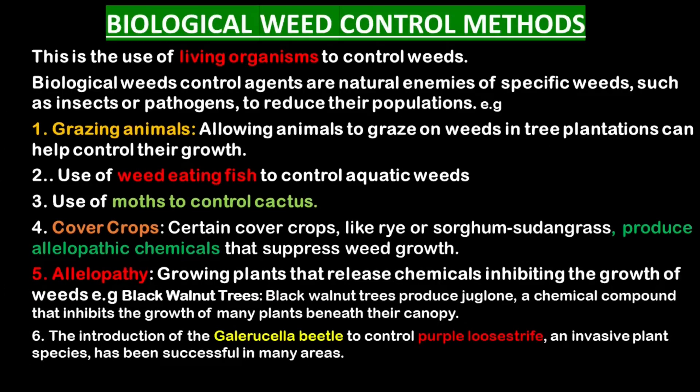Biological weed control is the use of living organisms to control weeds. Biological weed control agents are natural enemies of specific weeds, such as insects or pathogens, that reduce their populations. Examples include grazing animals that graze on weeds in between trees in tree plantations, weed-eating fish to control aquatic weeds, use of moths to control cactus, and the use of certain cover crops like rye or sorghum which produce allelopathic chemicals that suppress weed growth.